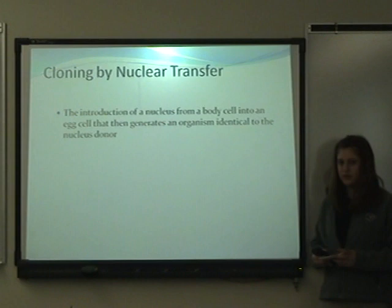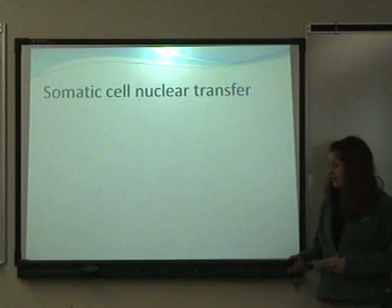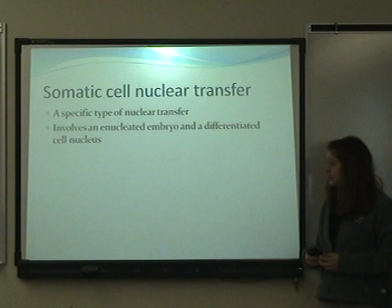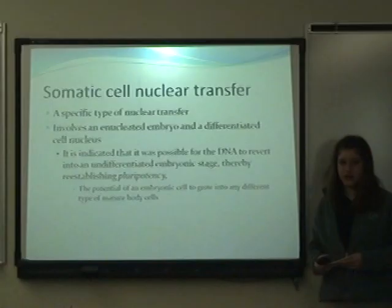Cloning through nuclear transfer was done in sheep. Somatic cell nuclear transfer is a specific type of nuclear transfer involving an enucleated embryo and a differentiated cell nucleus. It is indicated that it was possible for the DNA to revert into an undifferentiated embryonic stage, thereby reestablishing pluripotency — the potential for an embryonic cell to grow into any different type of mature body cell.